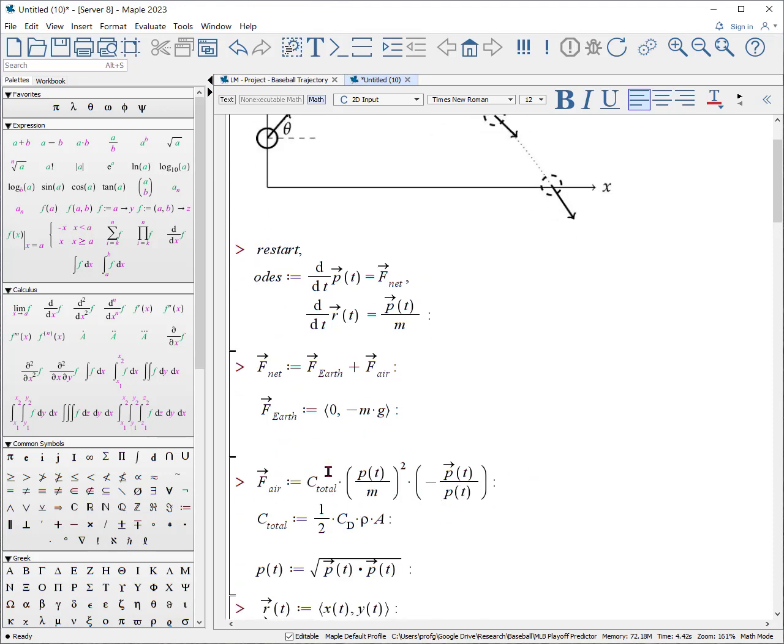We'll have the force of the air here, which is due to some constant times the speed squared, and so this is how we calculate speed. It's in the negative direction opposite the direction of the momentum, and so to calculate the direction of the momentum, we take the vector and divide by its magnitude.